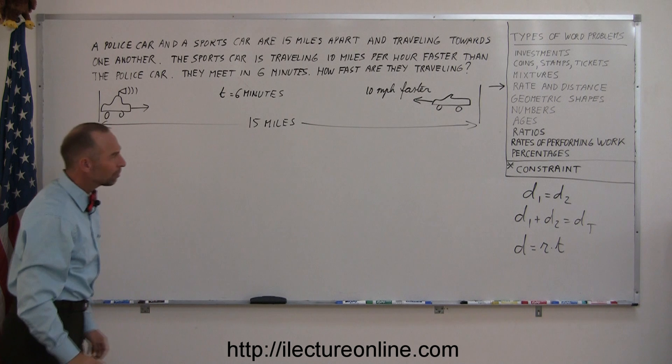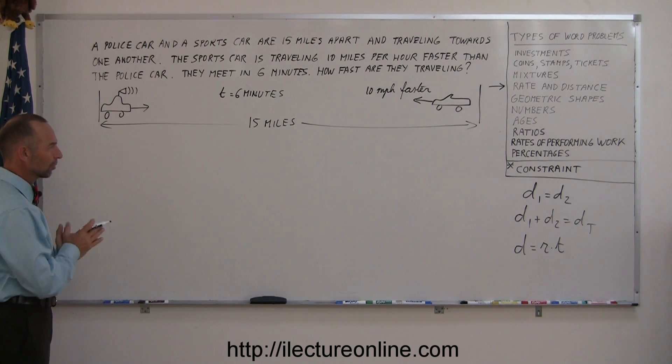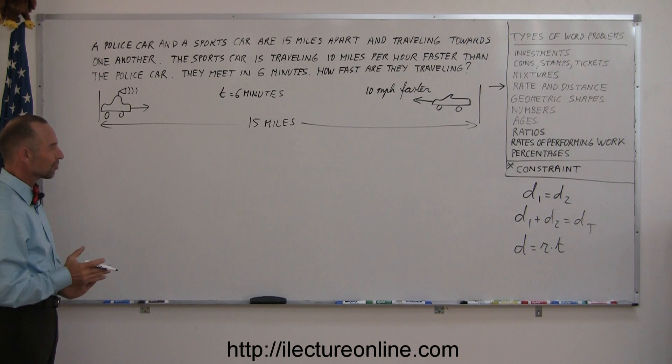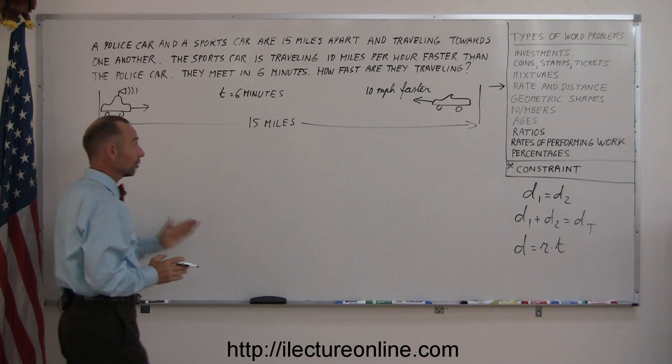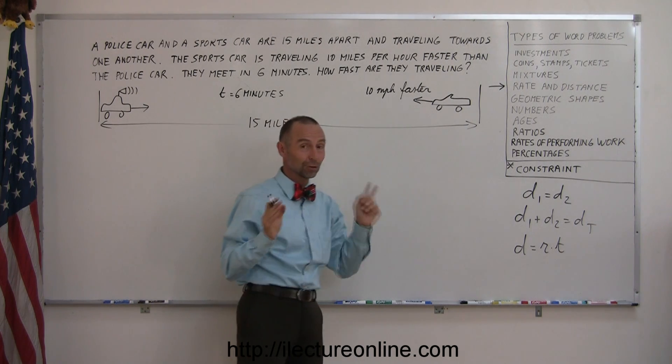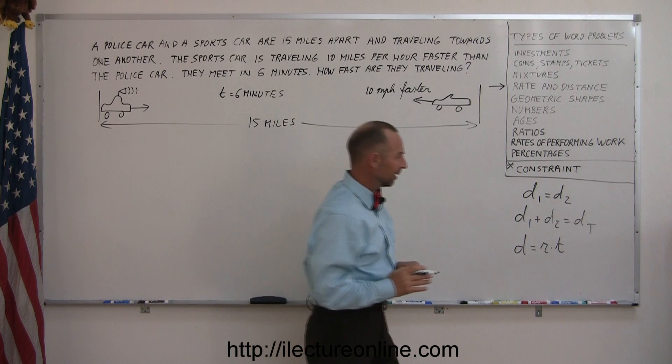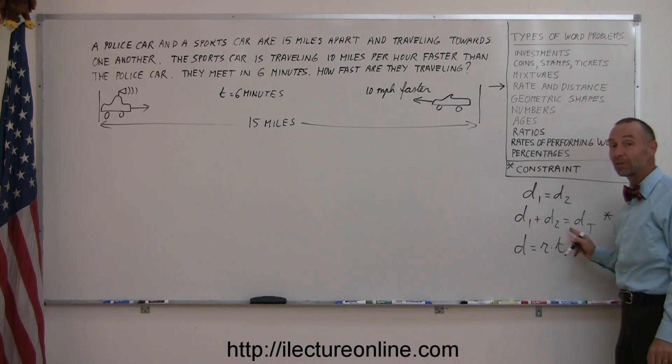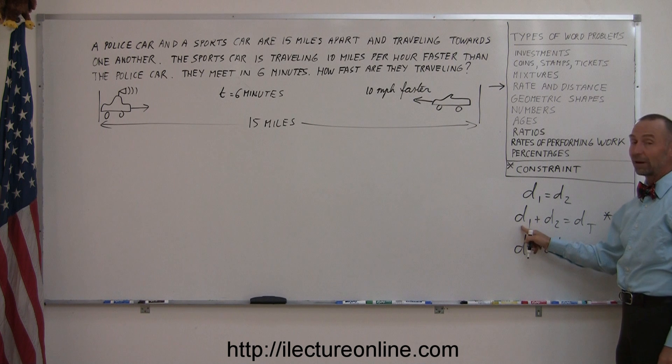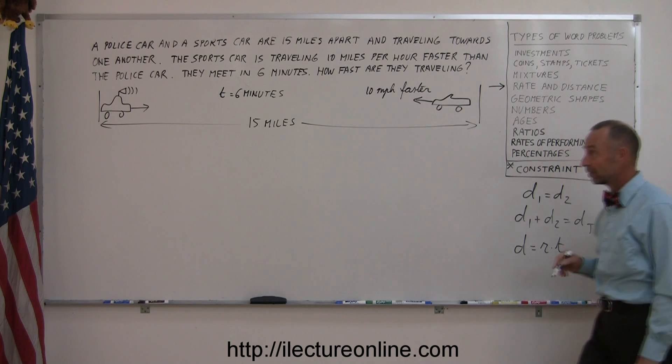All right, by looking at this picture, something seems to emerge. You know the total distance traveled. You don't know how far the police car travels. You don't know how far the sports car travels, but you do know that together they travel a total of 15 miles. And it all of a sudden appears like this may be the equation we're going to need to solve this problem. The distance traveled by the police car plus the distance traveled by the sports car equals the total distance traveled.